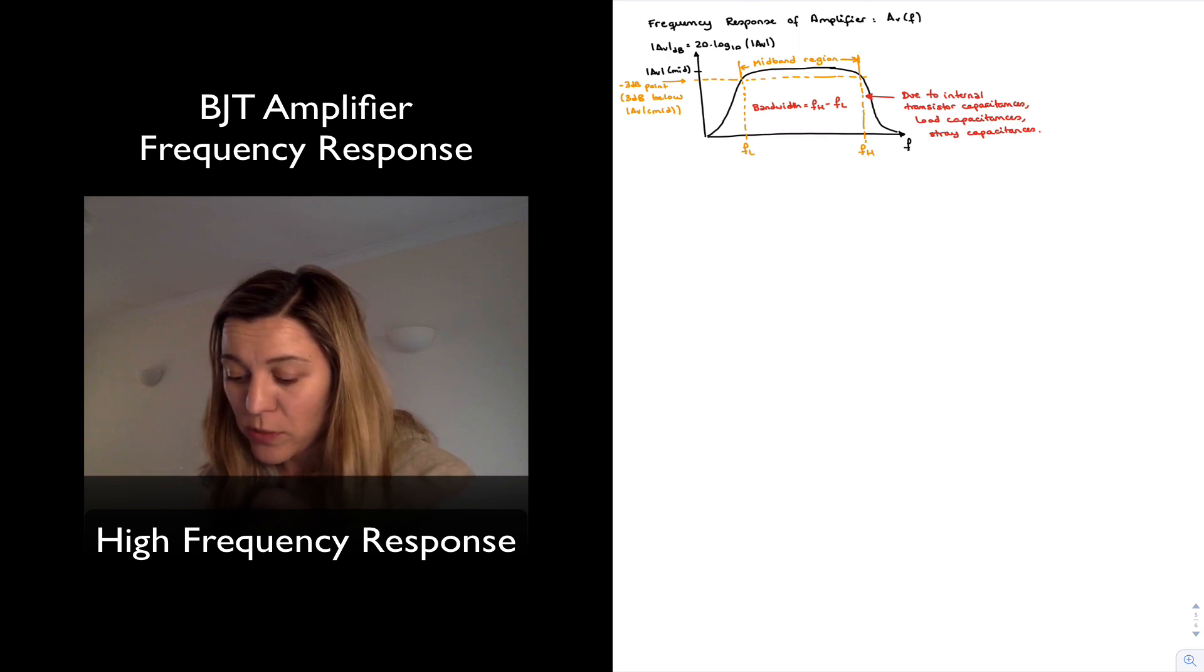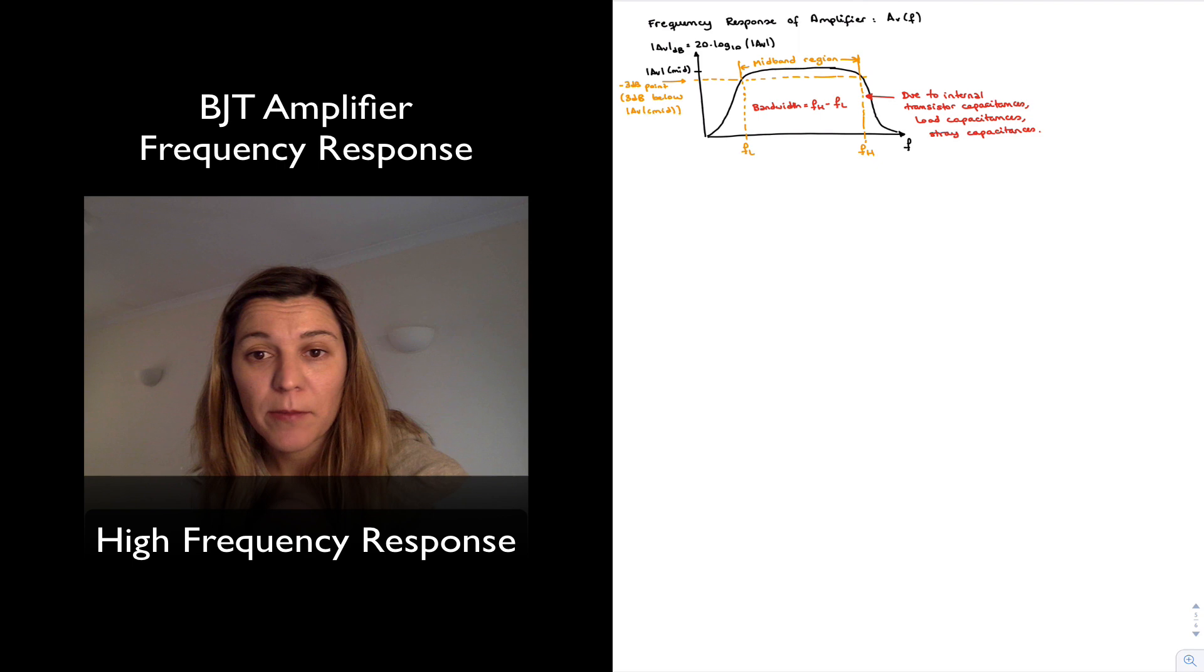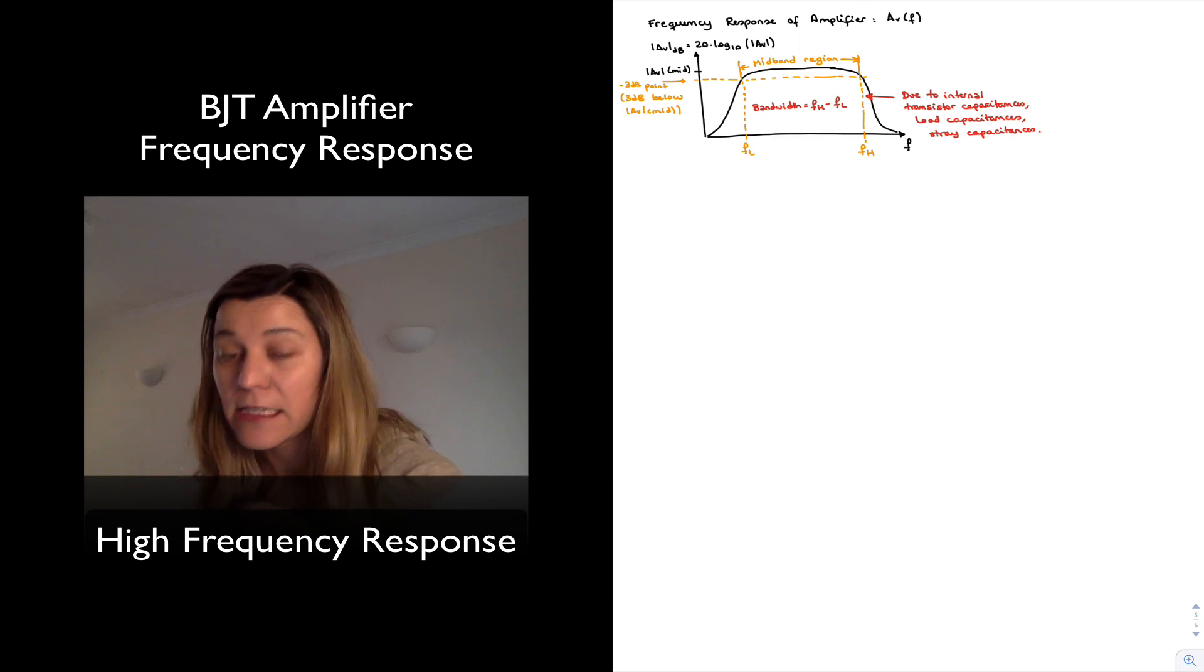By definition, the high cutoff frequency is going to be the minus 3 dB point, or the frequency at which the amplitude of the amplifier gain has decreased by a magnitude of 3 dB. So it's 3 dB lower than its value in the midband region.